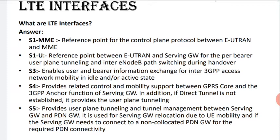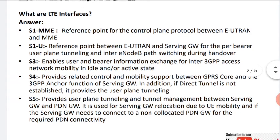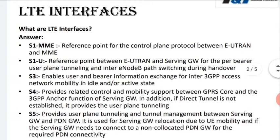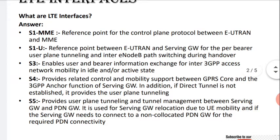Next is S3. This enables user and bearer information exchange for inter-3GPP access network mobility in idle or active states. Then S4 — this provides related control and mobility support between the GPRS core and the 3GPP anchor function of the Serving Gateway. In addition, if a direct tunnel is not established, it provides user plane tunneling.